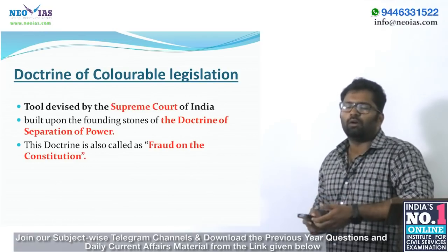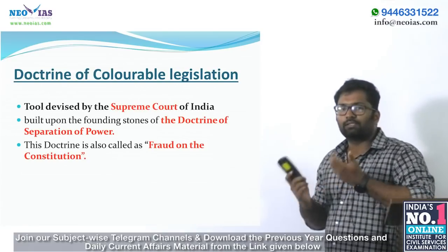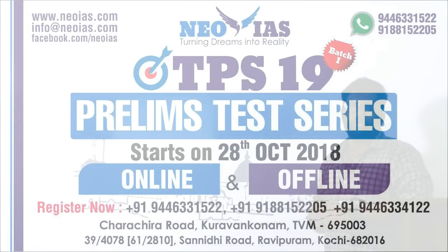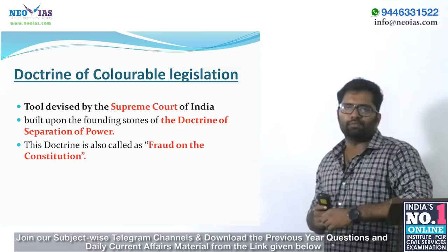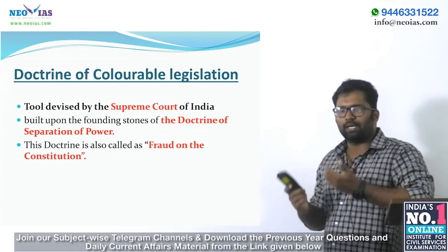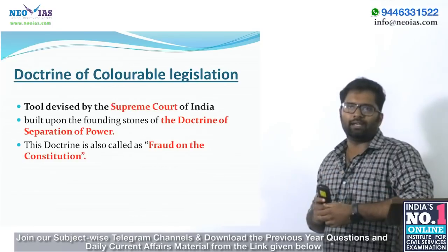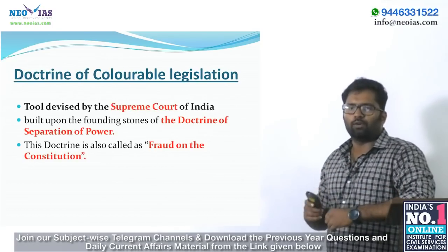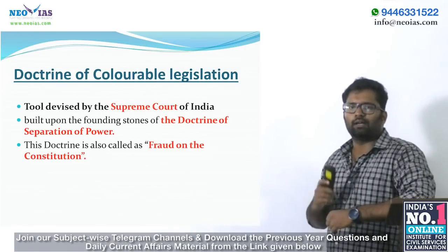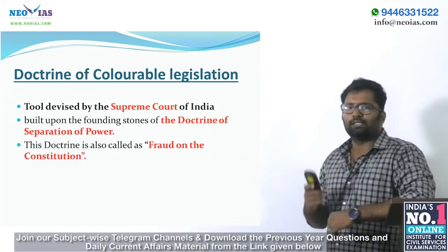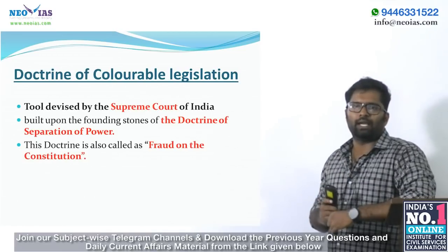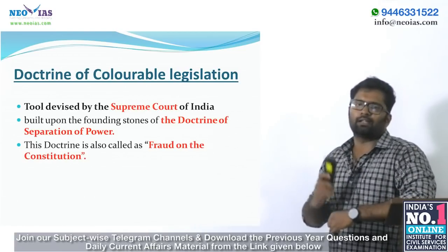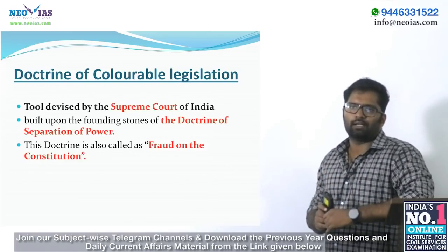In the context of GST, all pre-existing indirect taxes were subsumed into one regime. Taxes that could be levied by state governments — like sales tax — also moved under the ambit of GST. As part of a consensus, compensation to states was agreed upon. The Supreme Court upheld the Compensation to States Act, which levies an extra cess to compensate states, as constitutionally valid and not a colourable legislation.